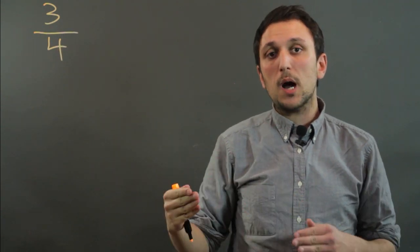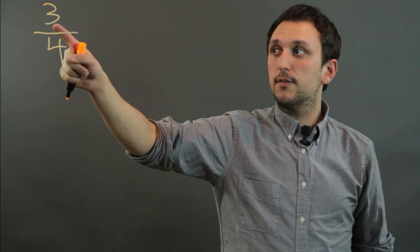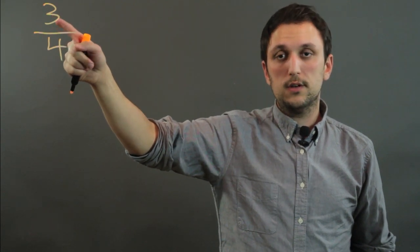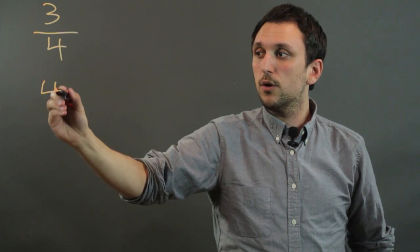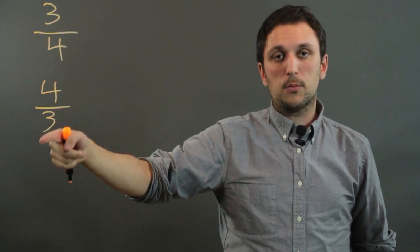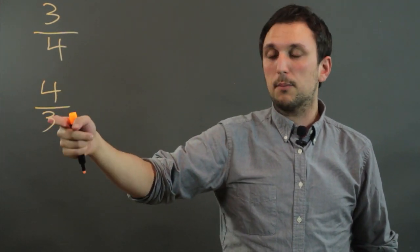Now in order for a number to be a proper fraction, you have to have a number smaller in the numerator than in the denominator. If we had the number say 4 over 3, this is not a proper fraction, it's called an improper fraction.